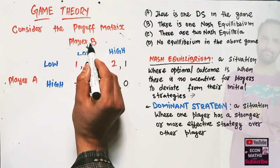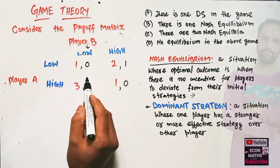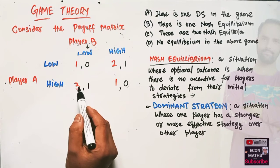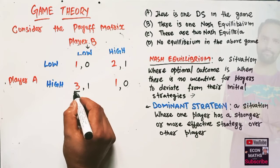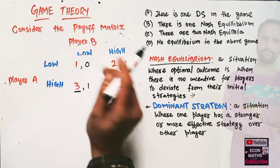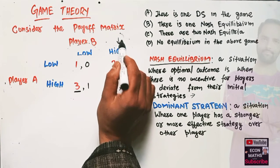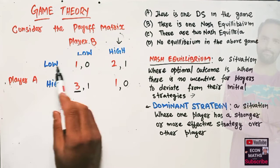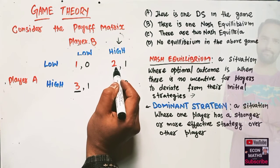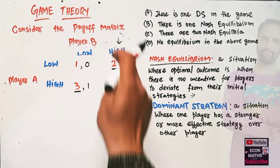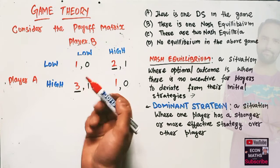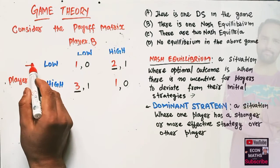For Player A, when Player B chooses low, Player A can go for low or high. High gives a payoff of three while low gives one, so Player A chooses high — we underline three. When Player B chooses high, low gives Player A a better payoff than high, so we underline that value as well.